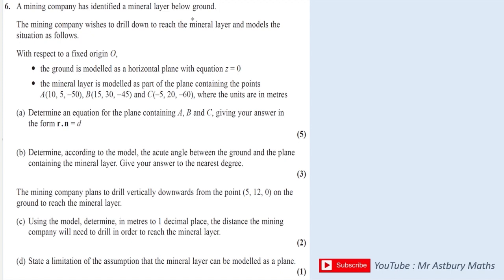We've got a mining company that we're going to be drilling down through the earth. And it says that the ground is modeled by the horizontal plane where Z is equal to zero. Z is the sort of vertical, up and down, so it's equal to zero, which means it's just flat along the ground. And it says a mineral layer is modeled as part of the plane containing these three points.